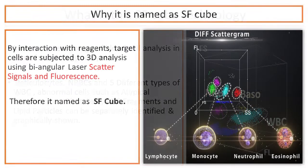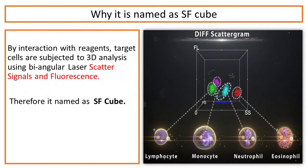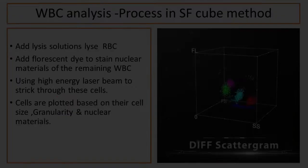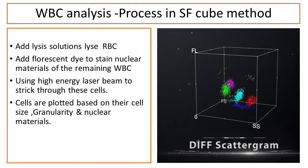Why is it named SF Cube technology? By interaction with reagents and fluorescent dye, target cells are subjected to 3D analysis using angular laser scatter signals. Therefore, it is named SF Cube. Let's see the white blood cell analysis process in the SF Cube method.